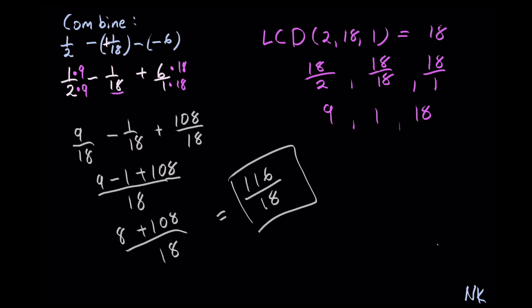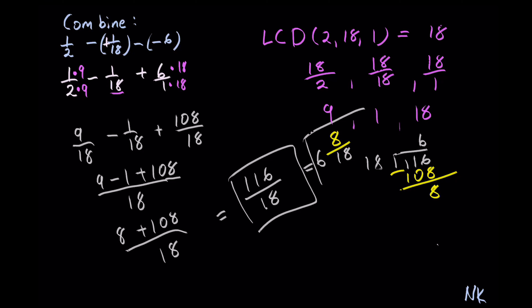And this is our solution. But if you need a mixed number, divide 18 into 116. 18 goes into 116 six whole times. 6 times 18 is 108. The difference between 116 and 108 is 8. So this fraction equals 6 and 8 out of 18 as a mixed number. That's all.